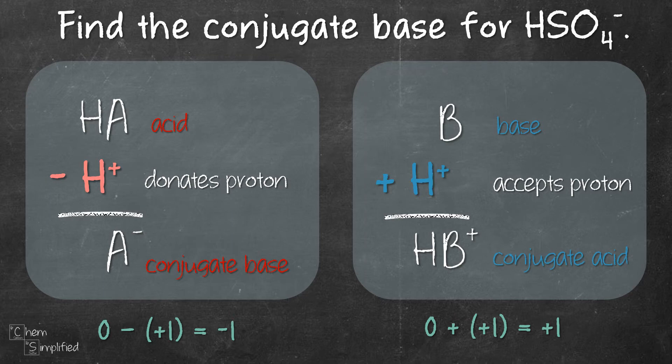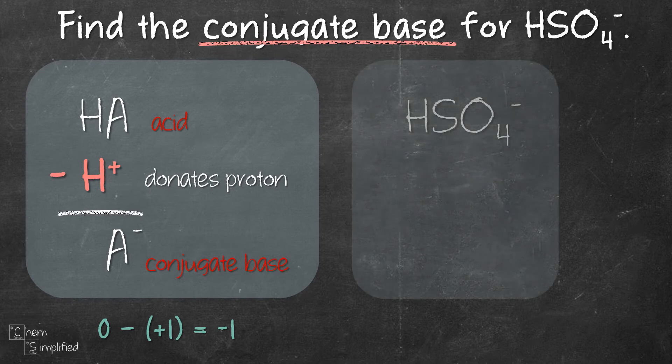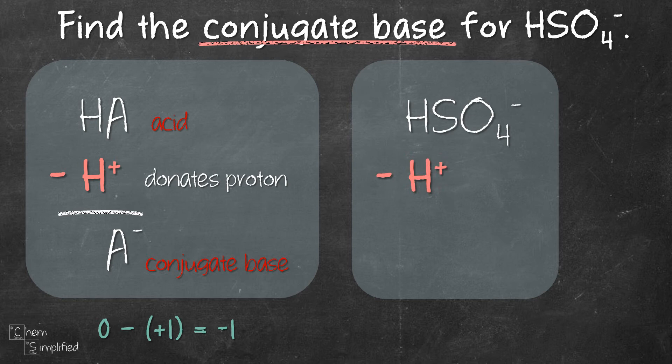Now let's see how we can use this method to answer question like this. Find the conjugate base for HSO4-. If we're asked to find the conjugate base, that means HSO4- is an acid. So looks like we're using the math on the left hand side. So we substitute our acid HA with HSO4- and then we subtract H+ and that will give us SO4.